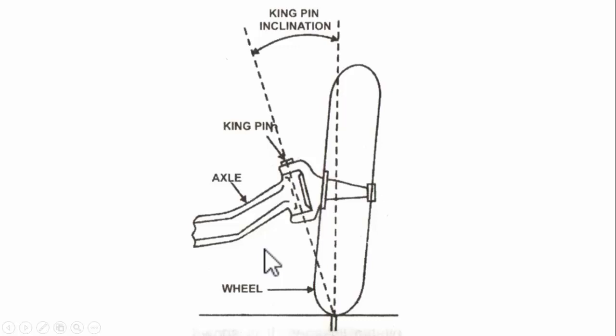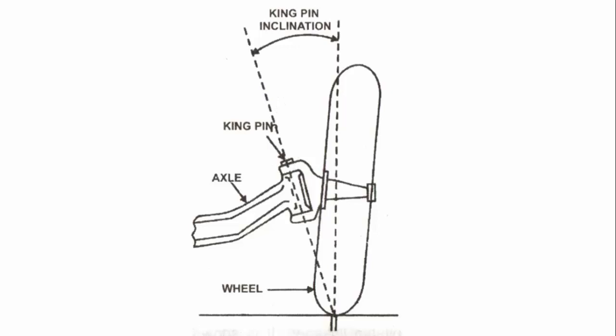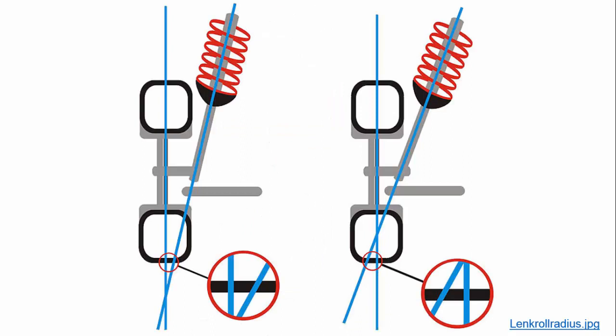The third angle is kingpin inclination. Kingpin inclination should be seen from the front or rear side of the vehicle. This is the angle made between the tire axis and the kingpin axis. Kingpin inclination affects the scrub radius.